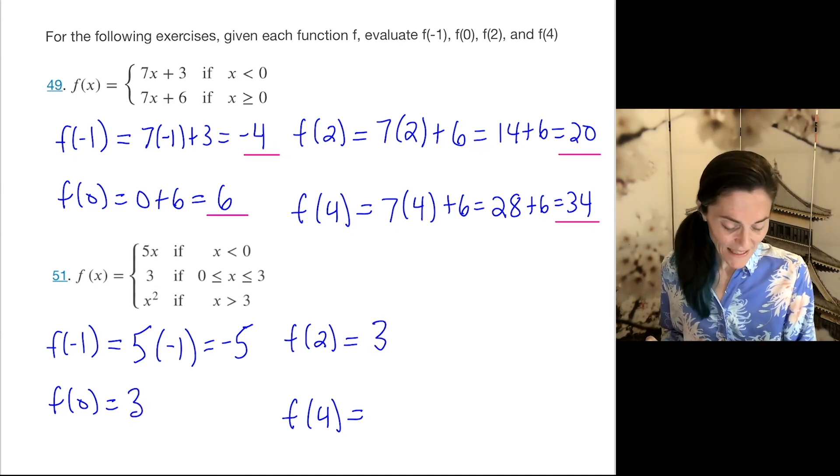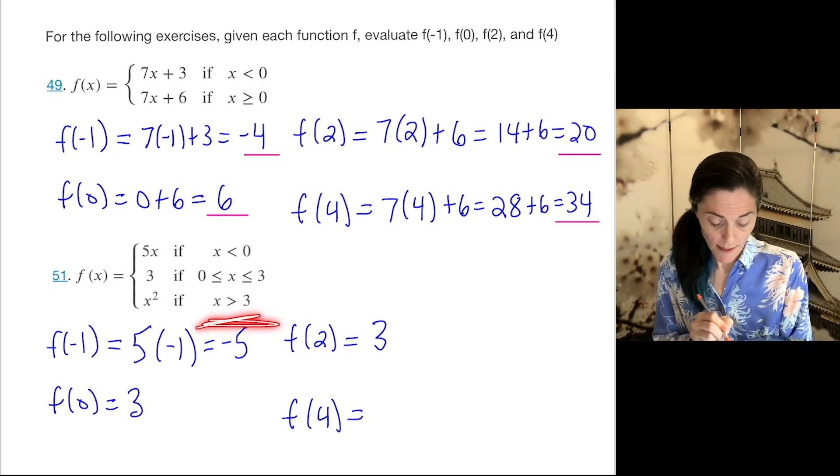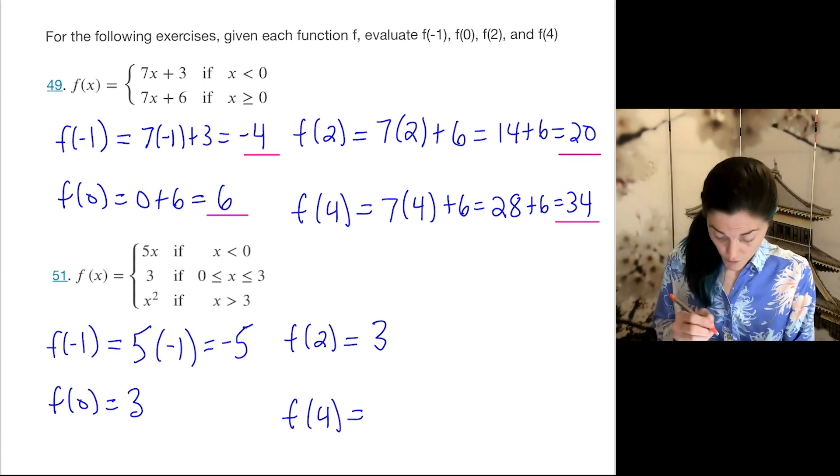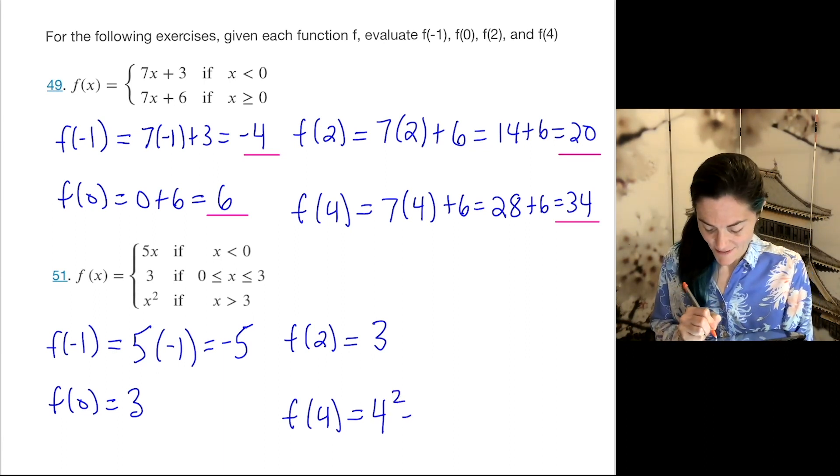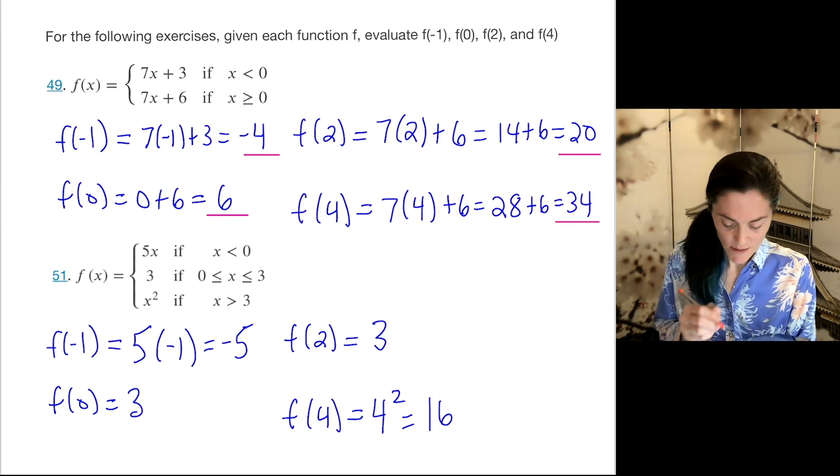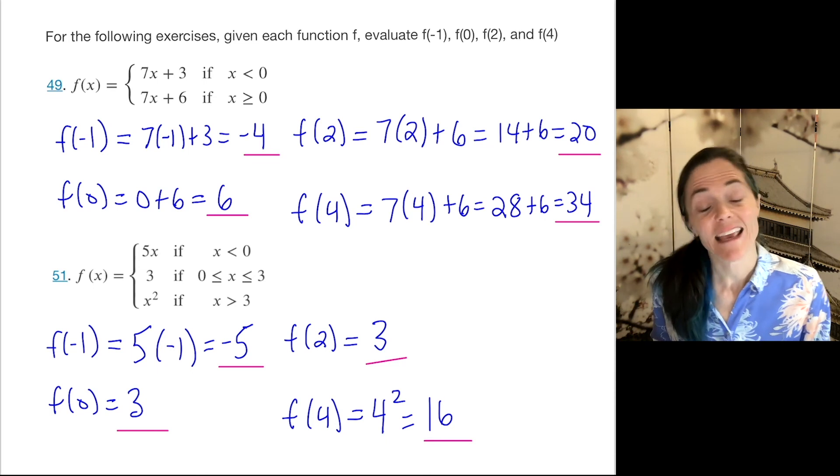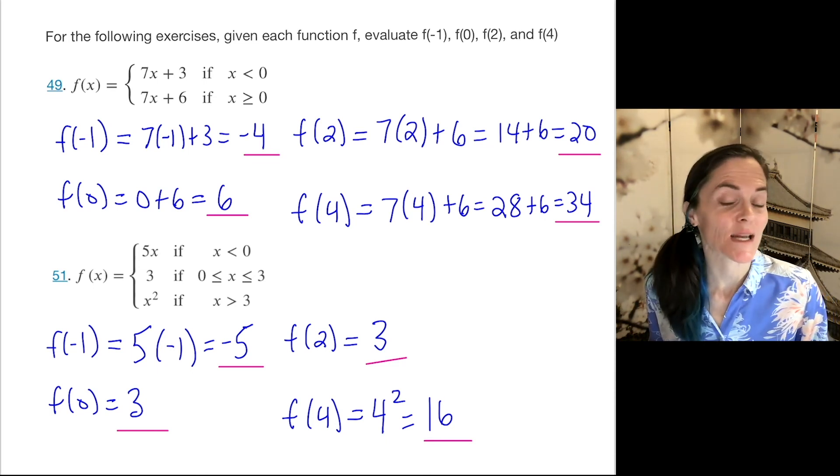Now finally, 4 is here, greater than 3. And f(4) would be 4 squared, which is 16. And so here are our four evaluations of this function in number 51.